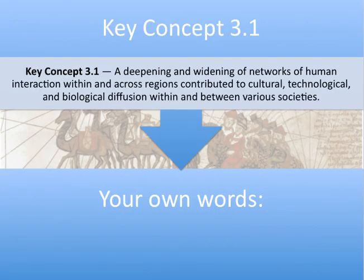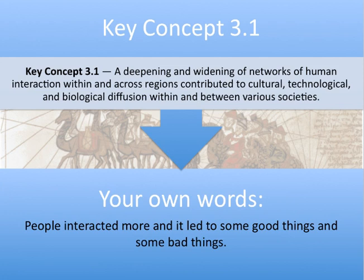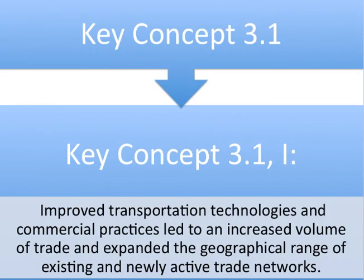Let's get started with Key Concept 3.1, which says a deepening and widening of networks of human interaction within and across regions contributed to cultural, technological, and biological diffusion within and between various societies. In my own words: people interacted more, and it led to some good things and some bad things. Key Concept 3.1, Roman numeral 1 says improved transportation technologies and commercial practices led to an increased volume of trade and expanded the geographical range of existing and newly active trade networks.